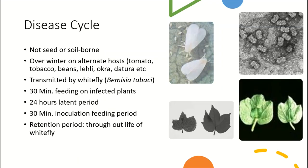Disease cycle. This disease is not seed-borne or soil-borne. Overwintering occurs on alternate hosts, which include tomatoes, tobacco, beans, lily, okra, and datura. It is a vector-transmitted disease.